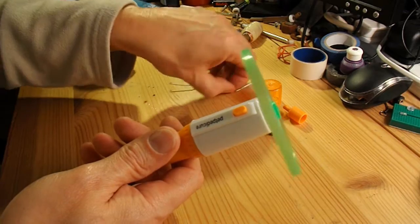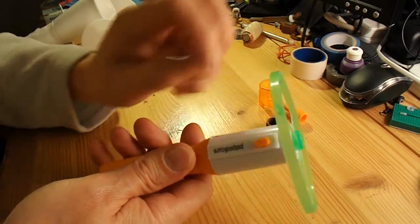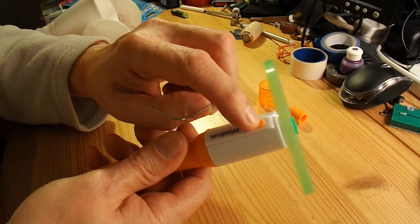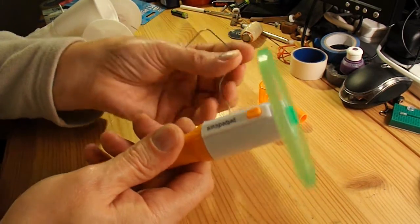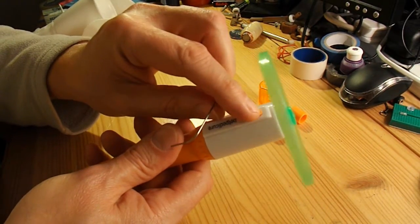I'm going to bend up a paper clip so that it goes over the on-off switch, so that I can actually twist it and it'll hold it on.